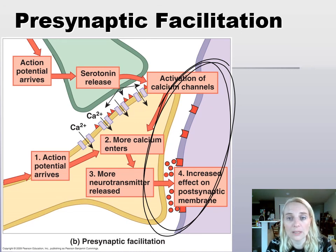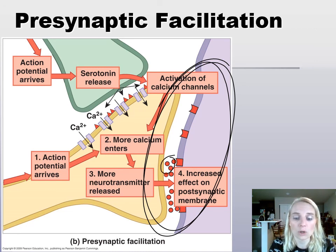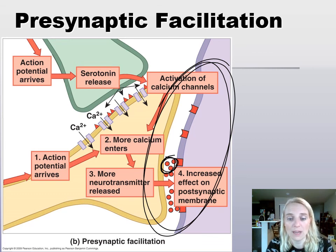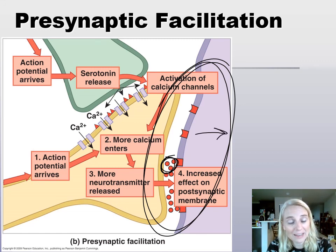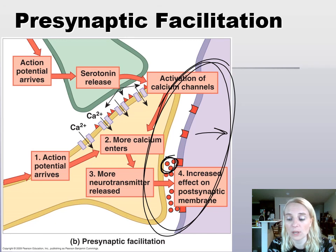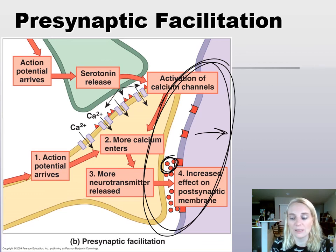If we release neurotransmitter and it binds to the receptor, it triggers a graded potential. How large that graded potential is — excitatory or inhibitory — is determined by the type of neurotransmitter, the type of receptor it's communicating to, and the quantity of neurotransmitter. That's it — we've finished chapter 12 content. Send questions via office hours, emails, or see me in lab. I'm looking forward to winter break and to coming back for 232. I will see you later.